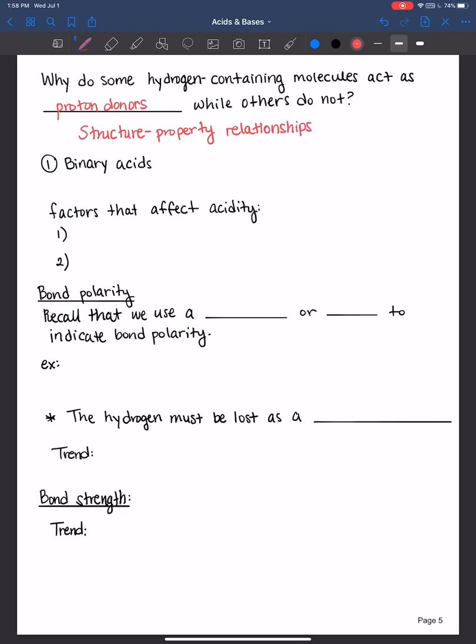If we understand the chemical structure, electronegativity, bond polarity, bond strength, then we will be able to understand why some hydrogen containing molecules act as acids while others do not.